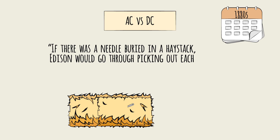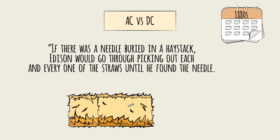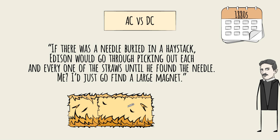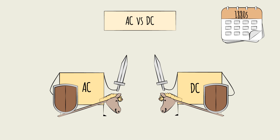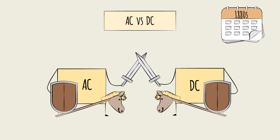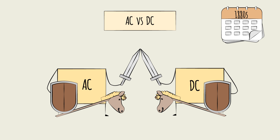Tesla famously said: 'If there was a needle buried in a haystack, Edison would go through picking out each and every one of the straws until he found the needle. Me, I'd just go find a large magnet.' These words capture their rivalry and their different approaches that led to the invention of the two types of currents: direct current, or DC, and alternating current, or AC.